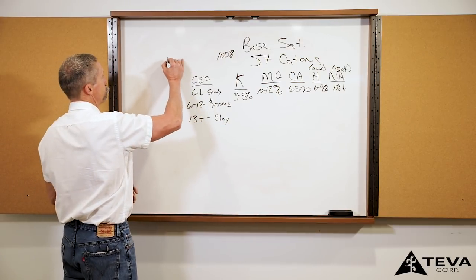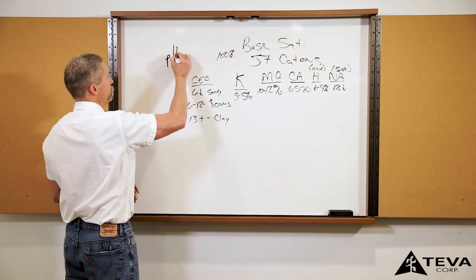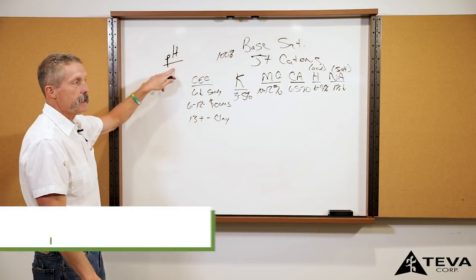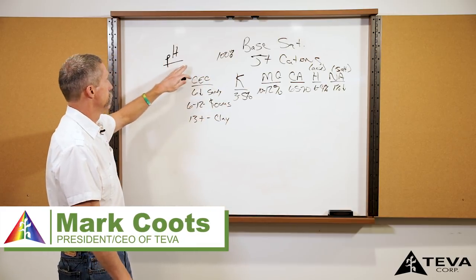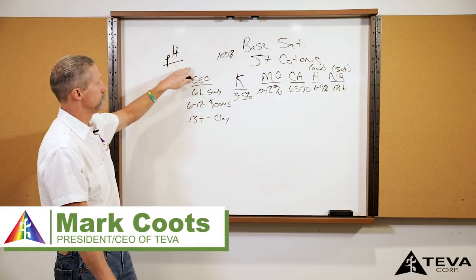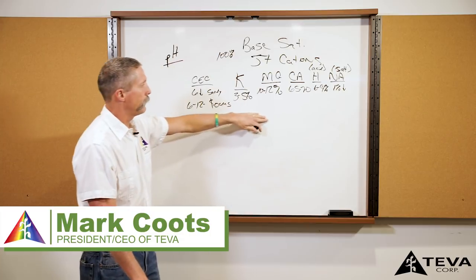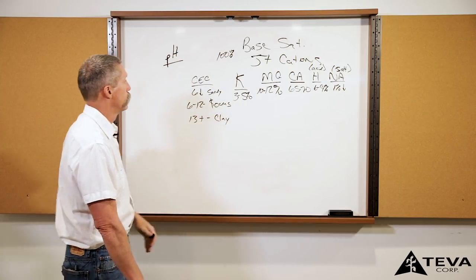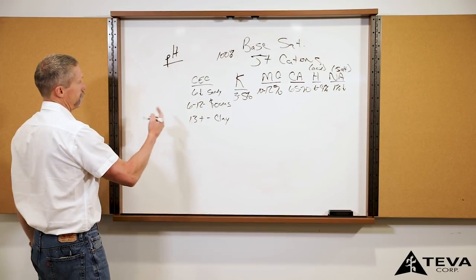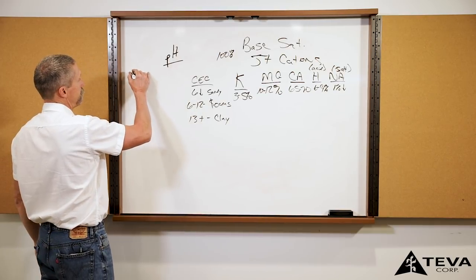When I look at the soil test, first thing I look at is your base saturation, then I look at your CEC, then we look at your pH. Your pH is made up because of these positive cations over here. It's actually checking your hydrogen off of these positive cations that you've got.